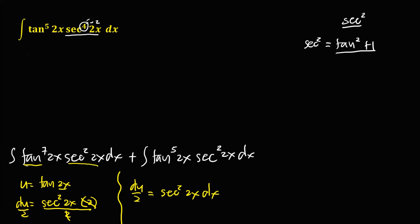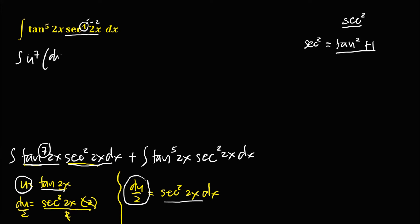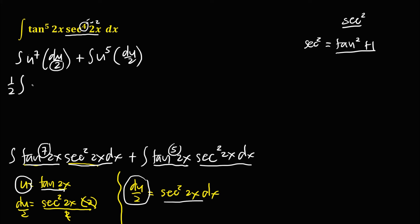Using the U-substitution, tangent 2x becomes U. So we have the integral of U to the power 7, times dU over 2, plus the integral of U to the power 5, times dU over 2. Putting the one-half outside gives: one-half times the integral of U to the power 7 dU, plus one-half times the integral of U to the power 5 dU.